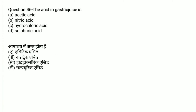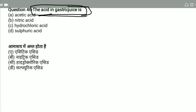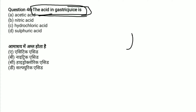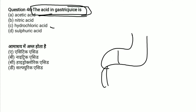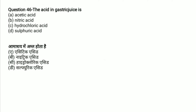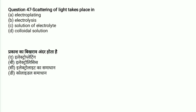The acid present in gastric juice — what is in the stomach? What is gastric juice? The acid present in gastric juice is HCl, hydrochloric acid. The answer is C.